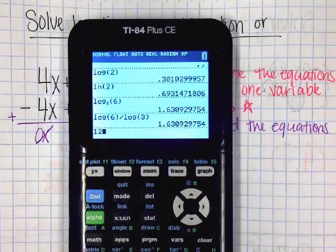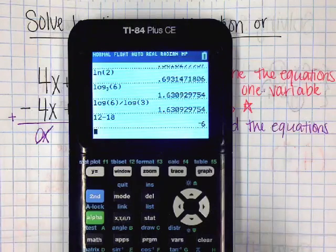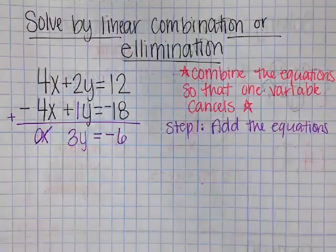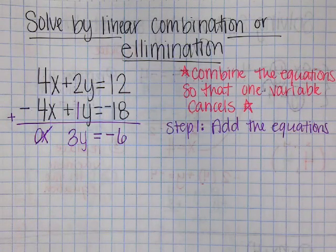Or, of course, you could type it in. 12 minus 18 is negative 6. Okay, this canceled, so I'm left with 3y equals negative 6.